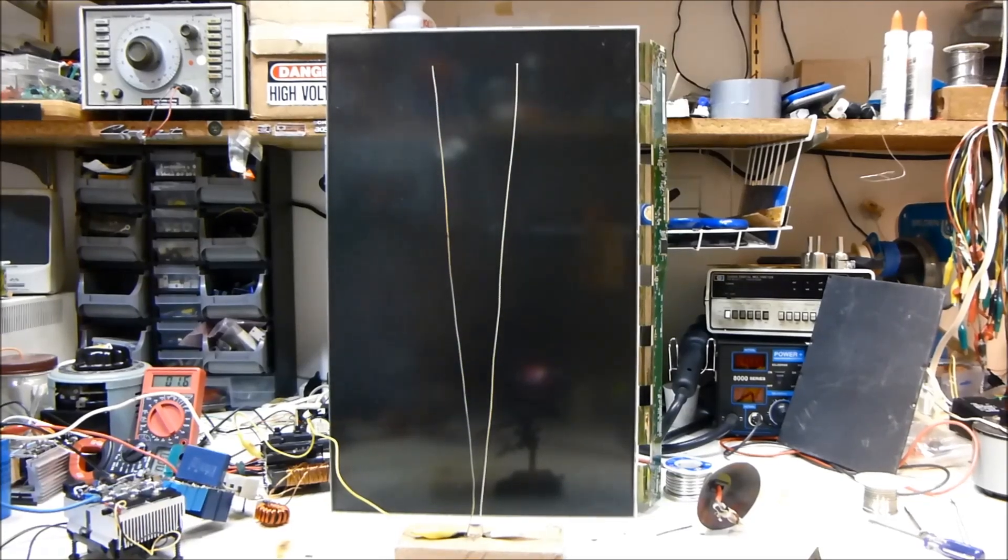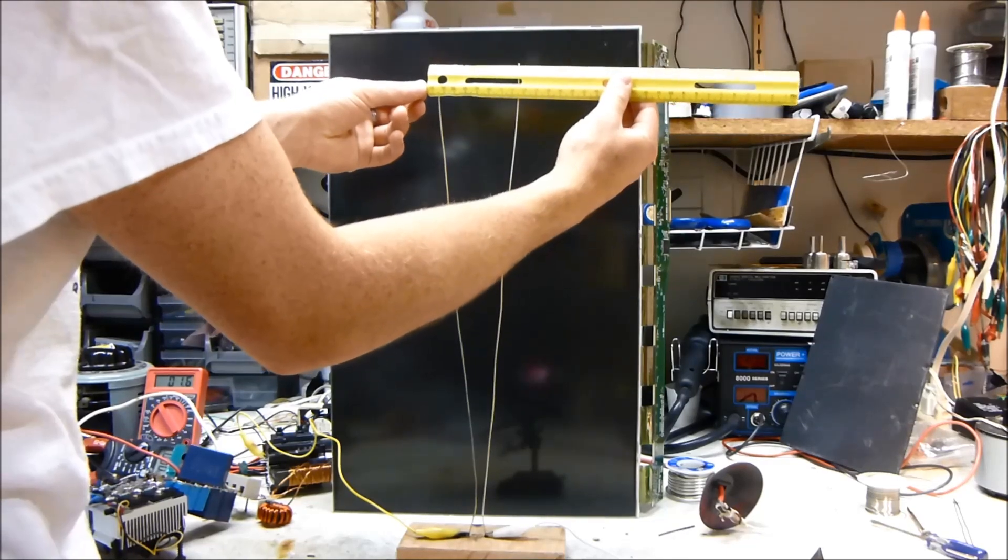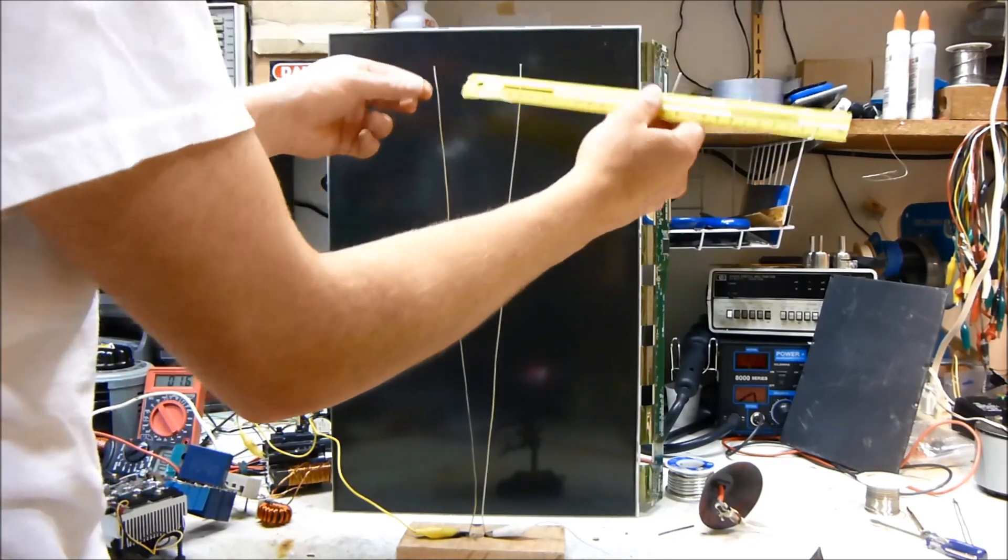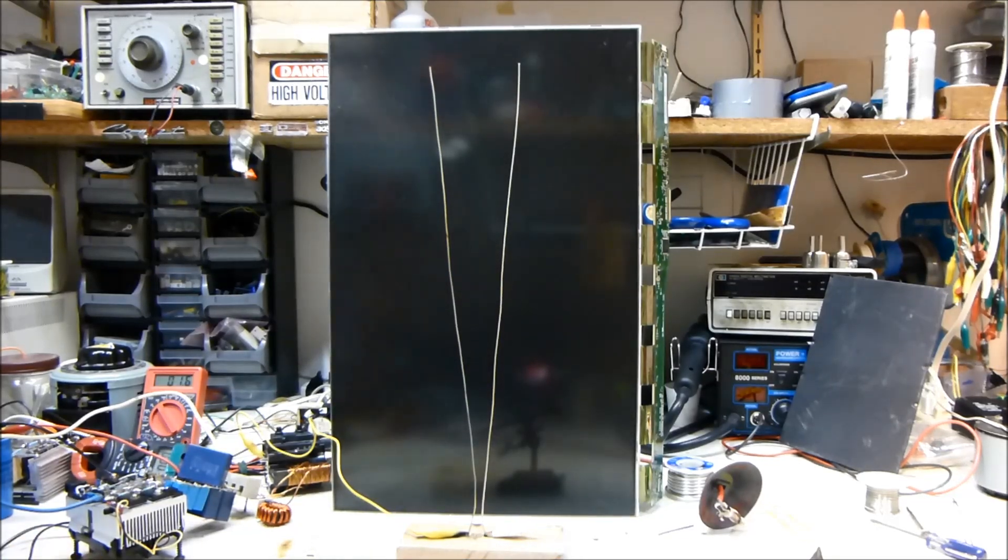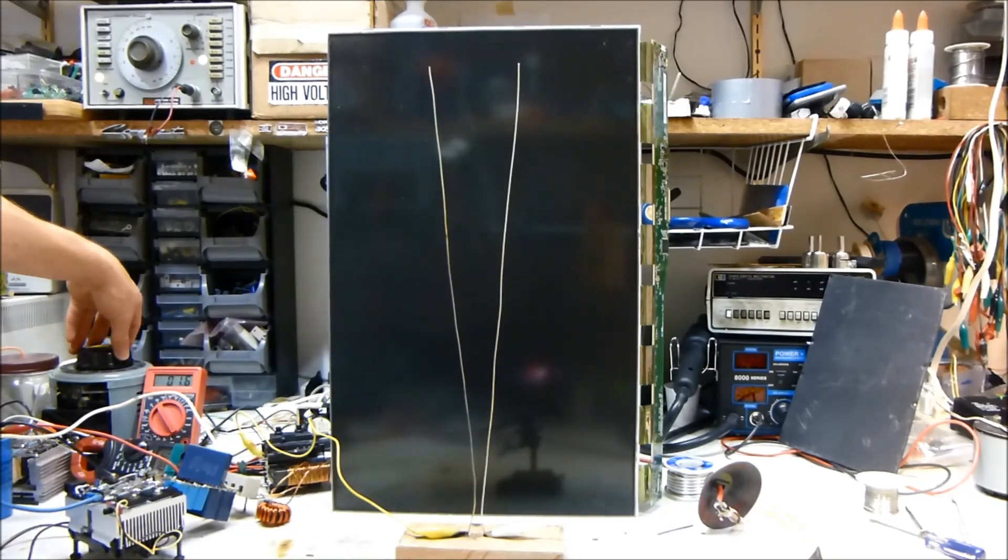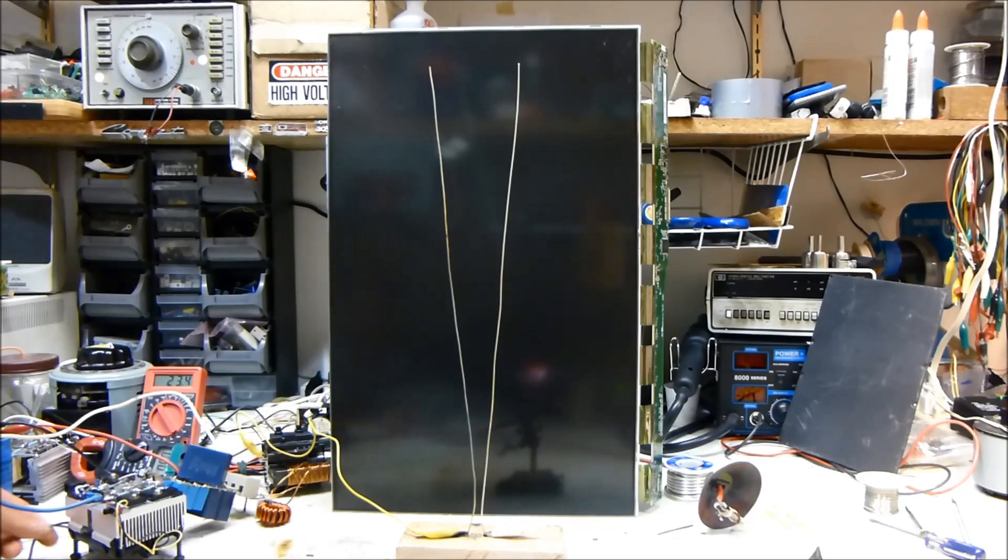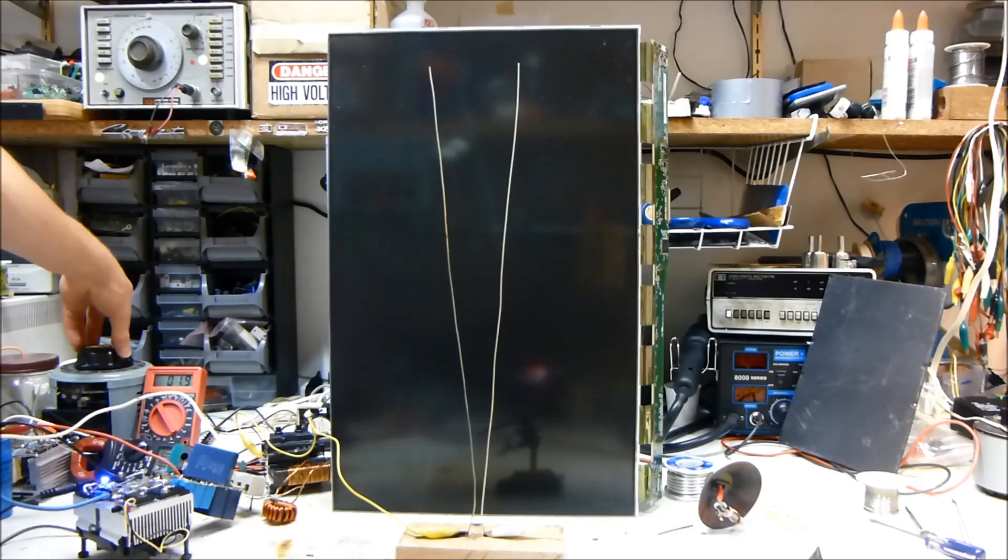Let's do some Jacob's Ladder arcing. So these are about three inches apart, or three and a half inches apart. I should move them out a little bit. All right, so about three and a half inches. Let's turn it on and we'll do some arcing. All right, here we go. Whoops, I don't have the gate drive in. That would make a big difference. All right, here we go.